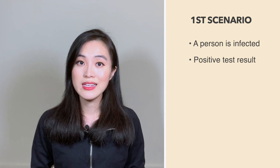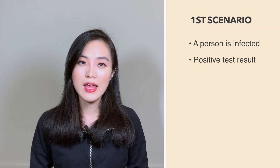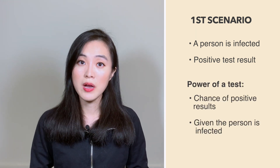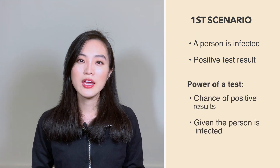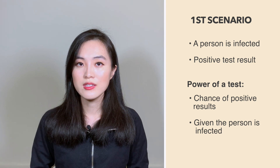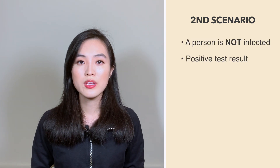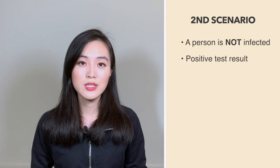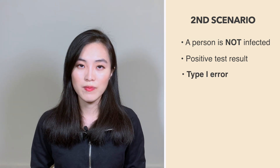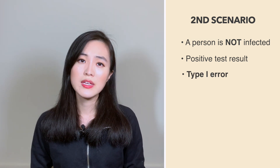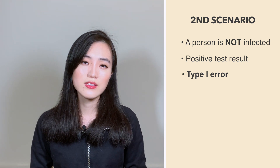Now let's explain these three concepts to a non-technical audience. Suppose a person wants to test if they're infected by coronavirus. The first scenario is that the person is indeed infected and the test result shows the same — that is the power of a test; it's the chance that the test tells us a person is infected when they truly are. The second scenario is that the person is not infected but the test result says they are — that is a type 1 error, which can be really bad because the person may take medical treatment that is completely unnecessary.